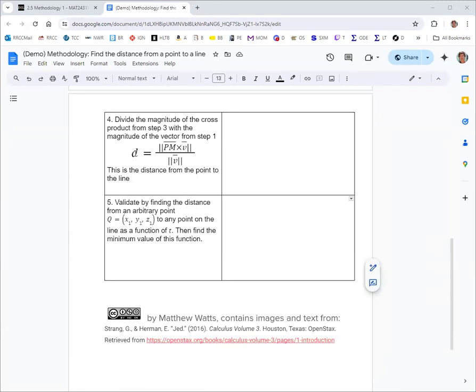To get the distance, we put all this together in the formula. We have the vector PM cross v, which is (4, 2, 0). We want the magnitude of that, which is the square root of the sum of the squares. So 4 squared plus 2 squared plus 0 squared, which is square root of 20.